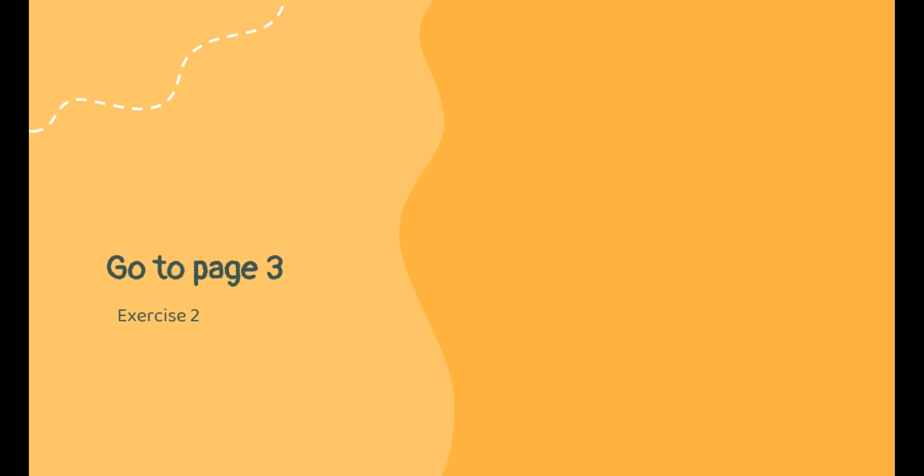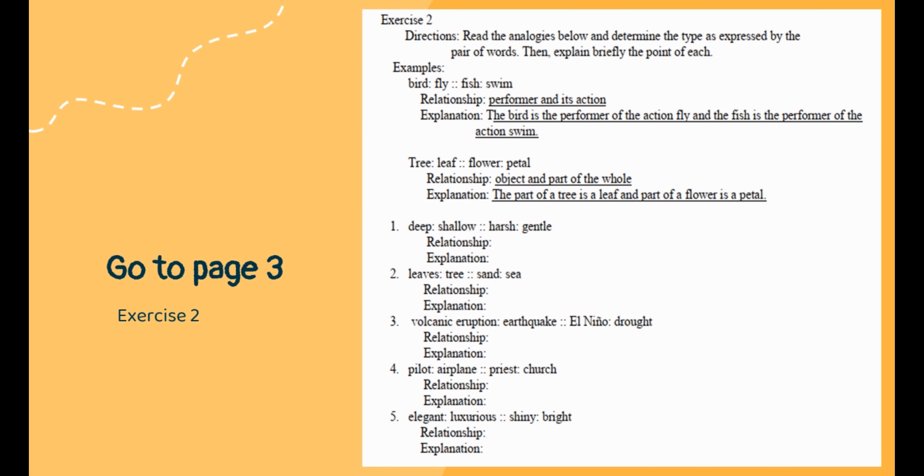For exercise two, read the analogies below and determine the type as expressed by the pair of words, then explain briefly the relationship. Example: bird is to fly as fish is to swim. Their relationship is performer and its action. The bird is the performer of the action fly, and fish is the performer of the action swim.